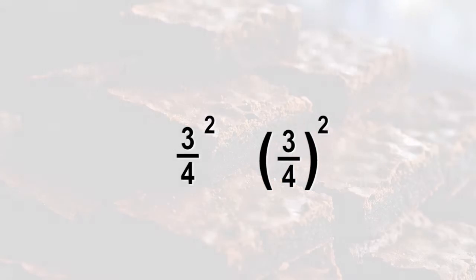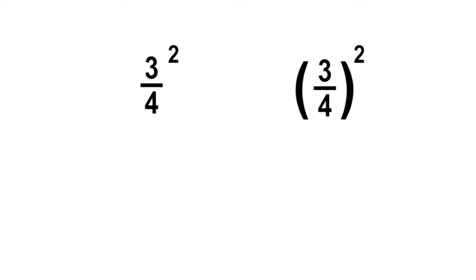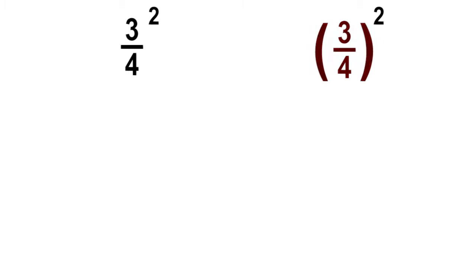Let's show the difference between three-fourths raised to the power of two, and three raised to the power of two with the fraction bar four. Let's solve the two expressions. With parentheses around the fraction three-fourths and the exponent of two, we know that we are multiplying the base of three-fourths two times. We know that three-fourths times three-fourths is nine-sixteenths.